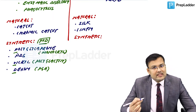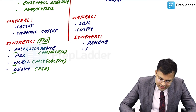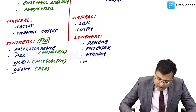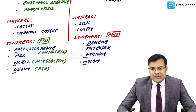Synthetic non-absorbable sutures: proline (also known as polypropylene), polyester, ethylon, and nylon. The mnemonic for synthetic non-absorbable sutures is PEN — proline, polyester, ethylon, nylon.